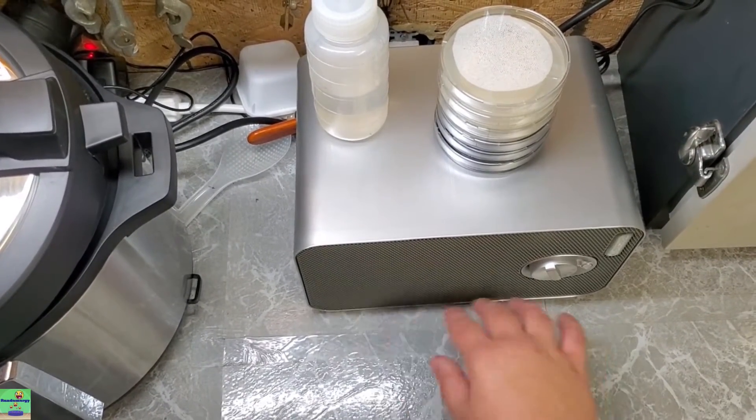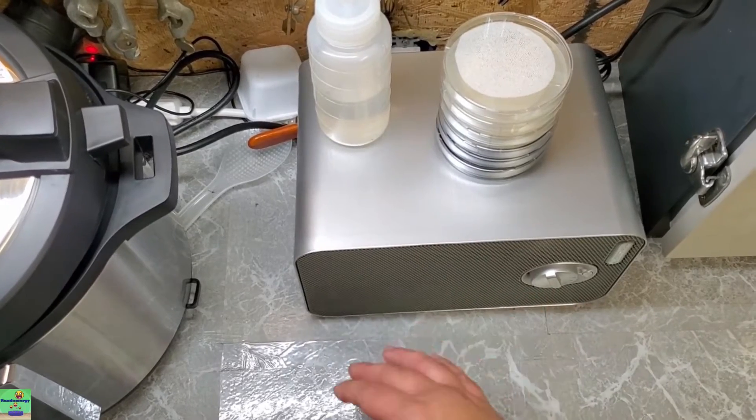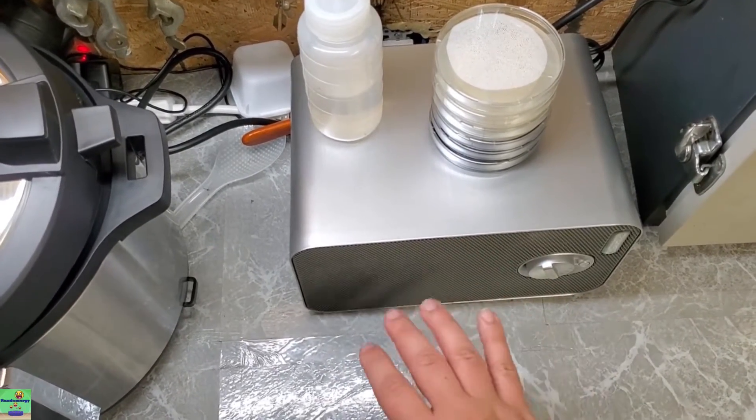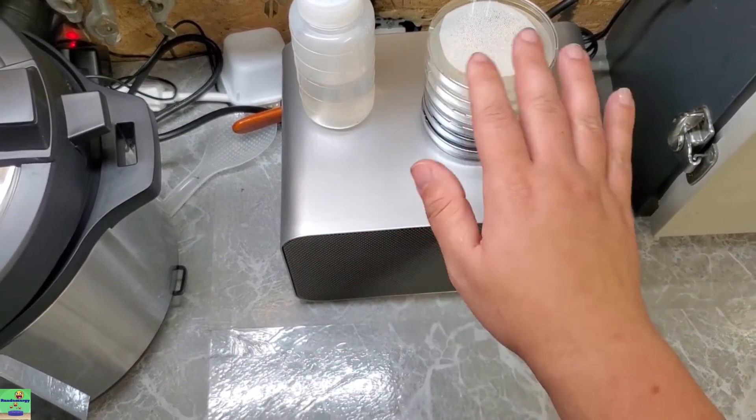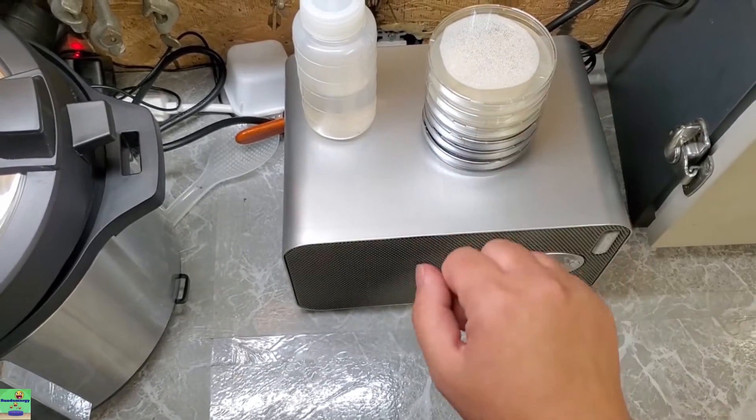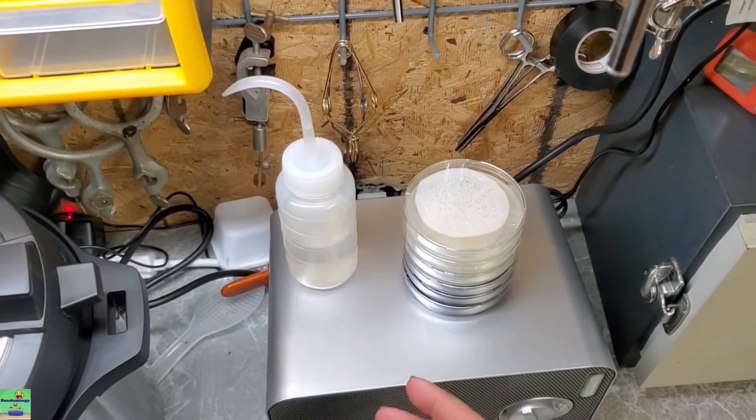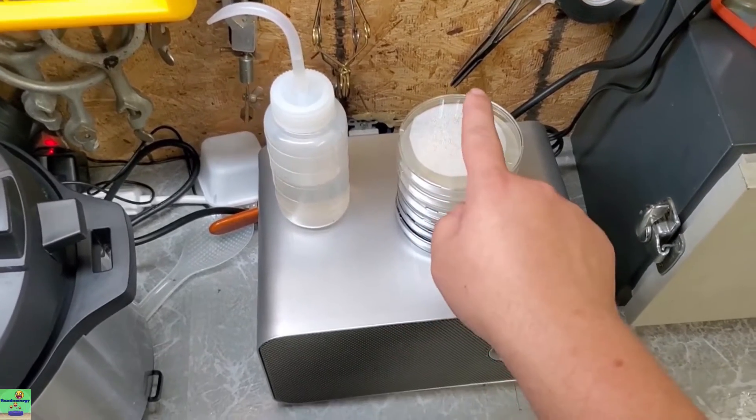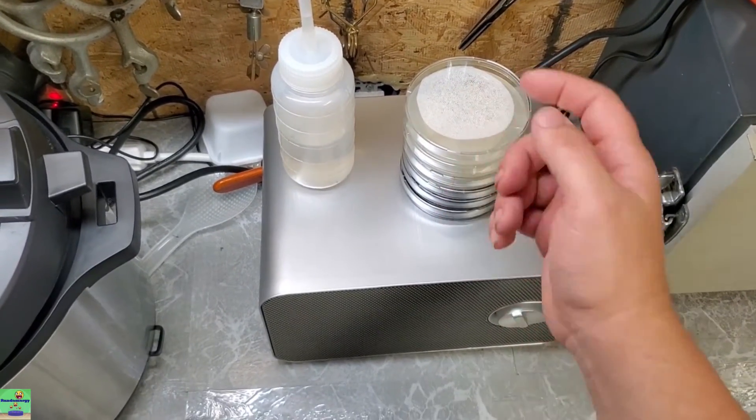This is really good for providing a nice steady flow of sterile air that you can work in front of or work in, and that'll keep a lot of contaminants away from getting into your petri dishes. It works pretty well and it's a cheap solution to a laminar flow hood.